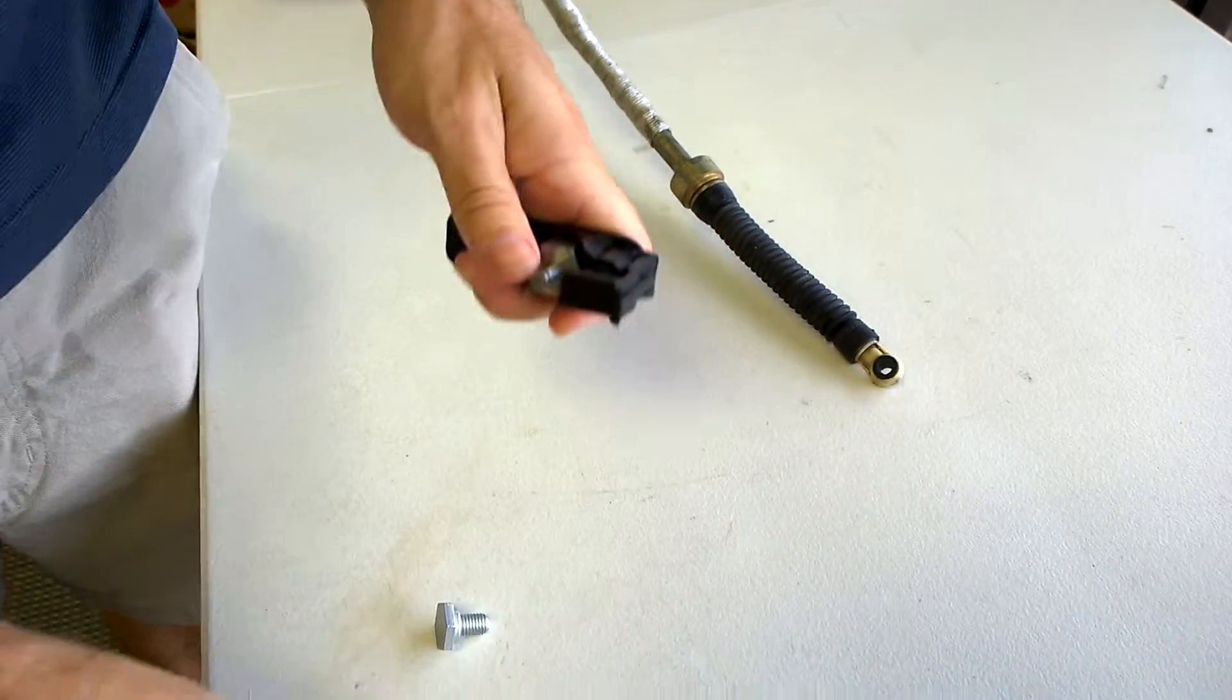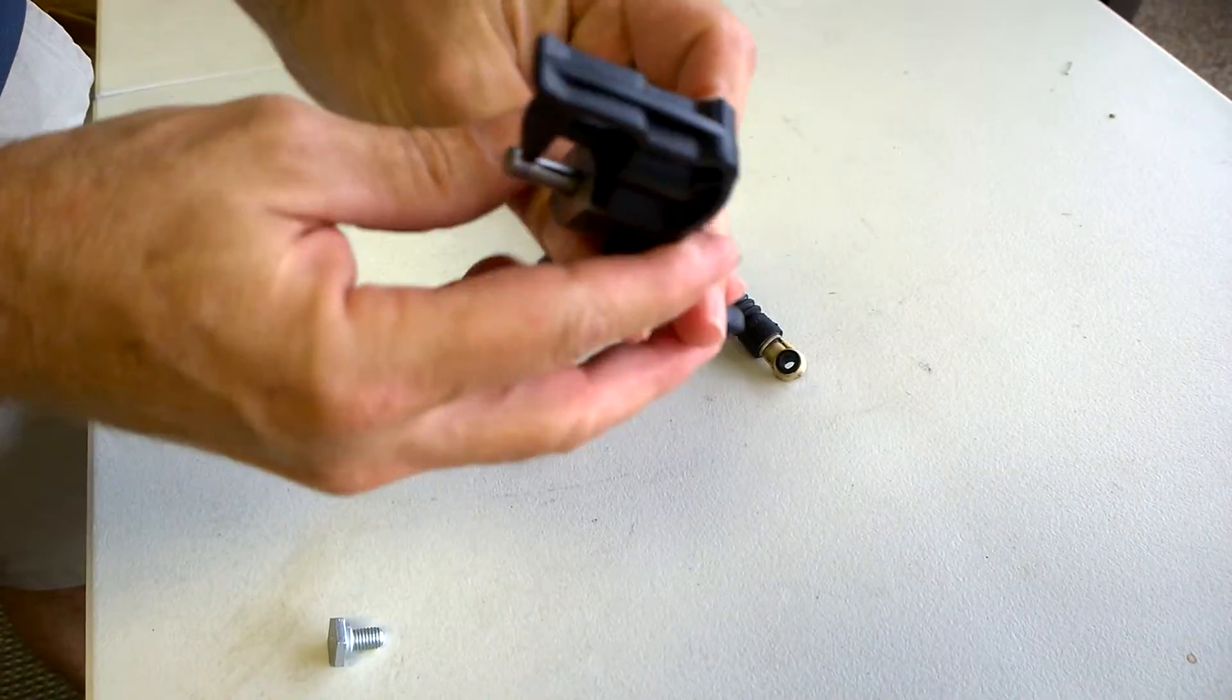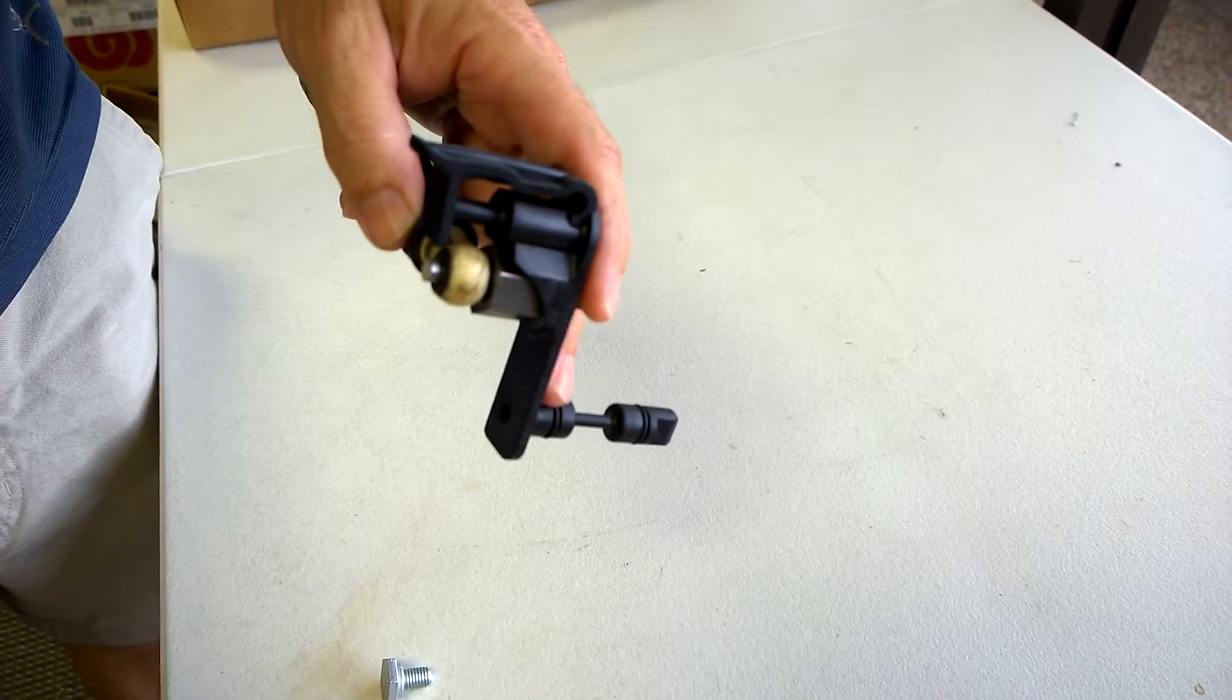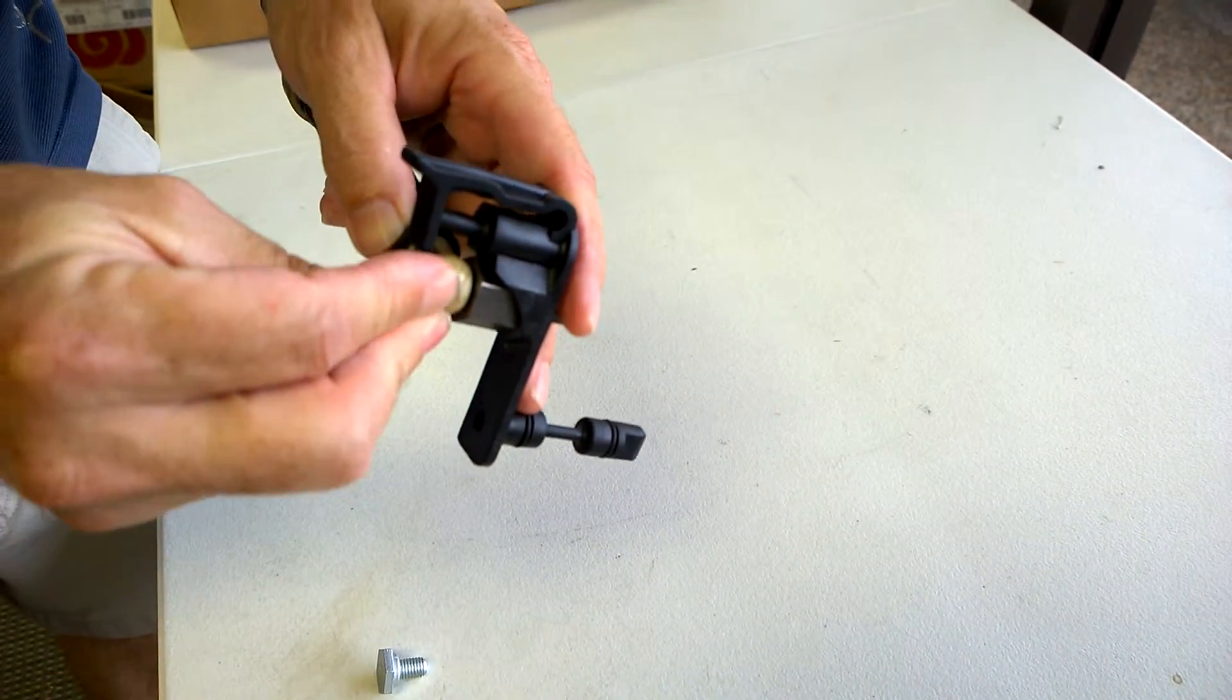The shift cable will now attach down low, and then put the circlip back on.